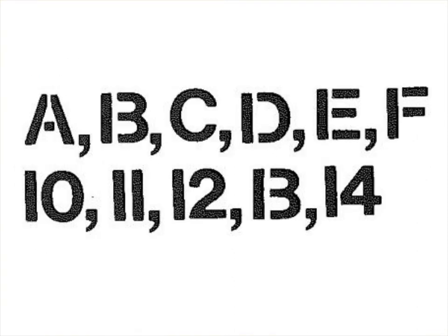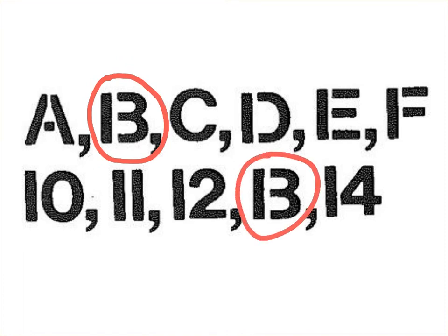Here's another example of context effects. Study these stenciled letters and numbers for a bit. Did you notice that the letter B in the first line is exactly the same as the number 13 in the second line? If you didn't catch that, don't feel bad about it. Given the context clues — a set of letters in the first line and a set of numbers in the second line — your perceptual set provided you with the most likely interpretation of the stimulus, thanks to context effects.